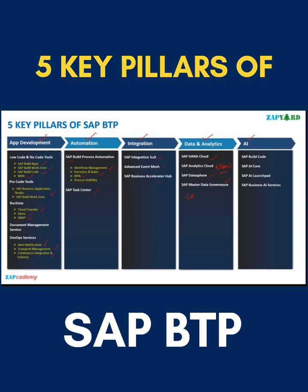On the AI front, SAP has introduced SAP Build Code, where they have introduced Joule — a generative AI assistant built to help develop applications. This is helpful for developing full-stack applications, Fiori element-based applications, and mobile development. SAP is also building their own AI Core, where you can work with different models, do RAG, and build your own Python-based models. SAP is also providing AI Launchpad and is doing work on Business AI services as well.